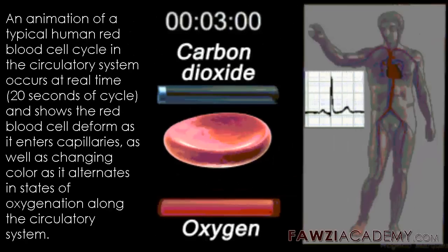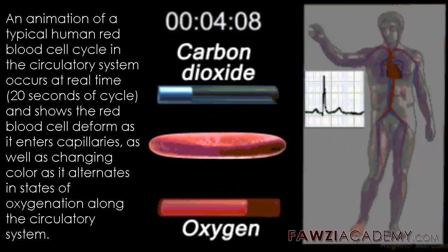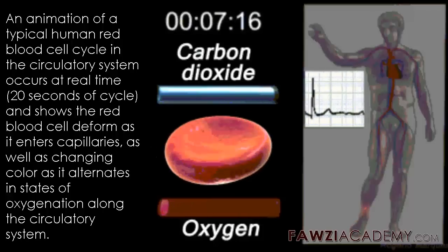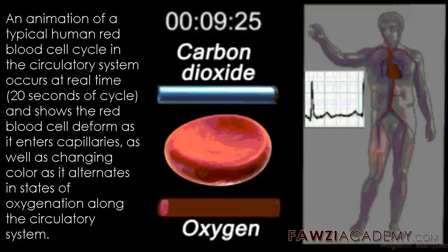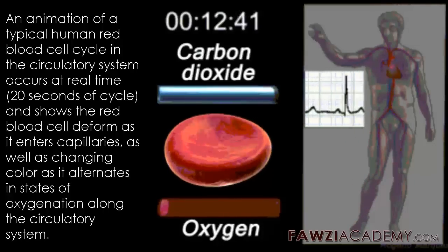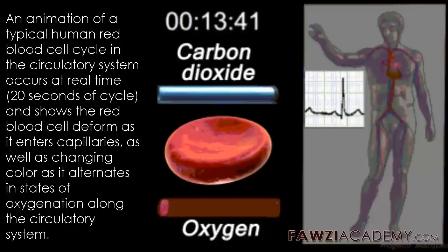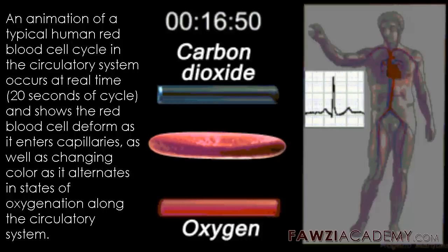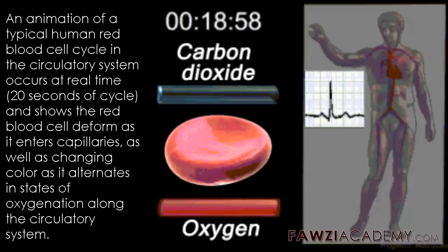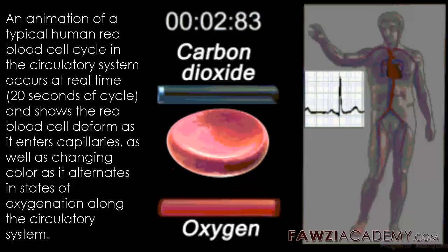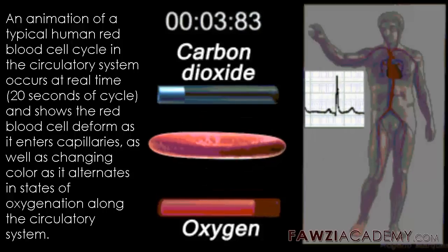An animation of a typical human red blood cell cycle in the circulatory system. This animation occurs at real-time 20 seconds of cycle, and shows the red blood cell deform as it enters capillaries, as well as changing color as it alternates in states of oxygenation along the circulatory system.